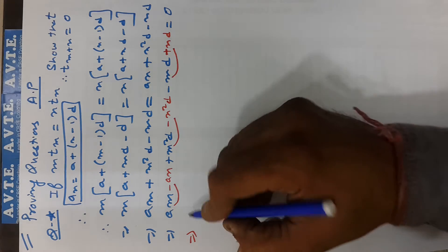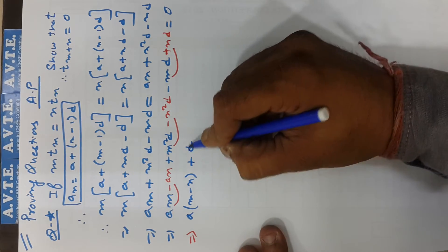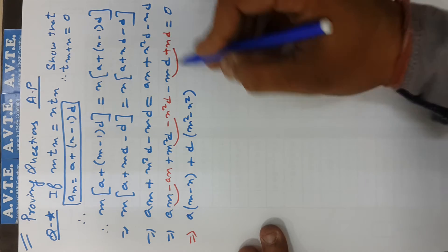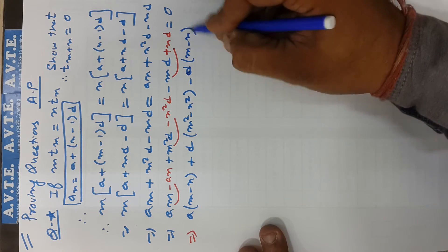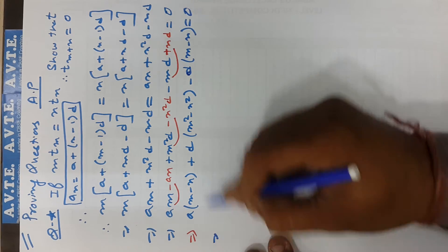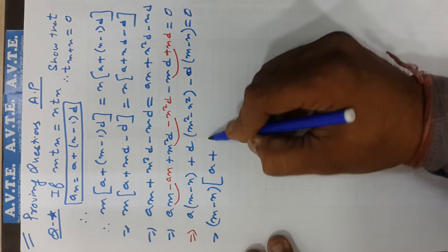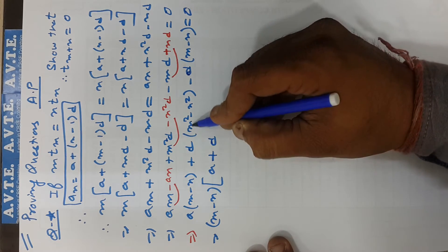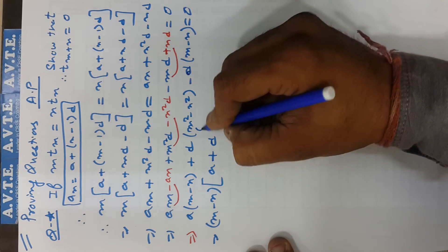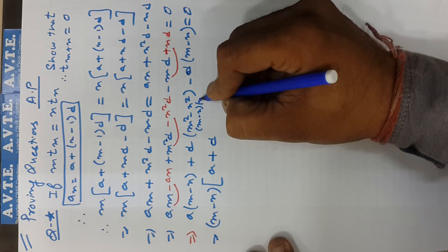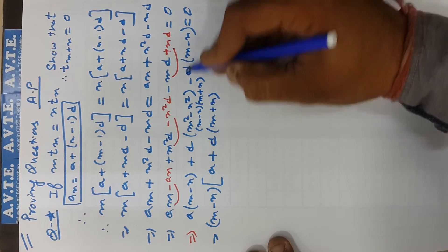Taking a common gives us a(m - n). Taking d common from the squared terms gives m² - n², which factors as (m-n)(m+n). And taking -d common gives -(m - n). So we factor out (m - n) from all terms.